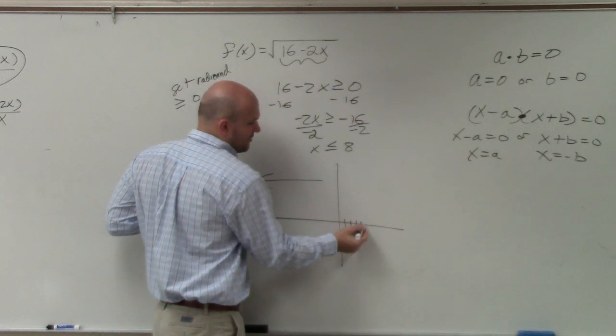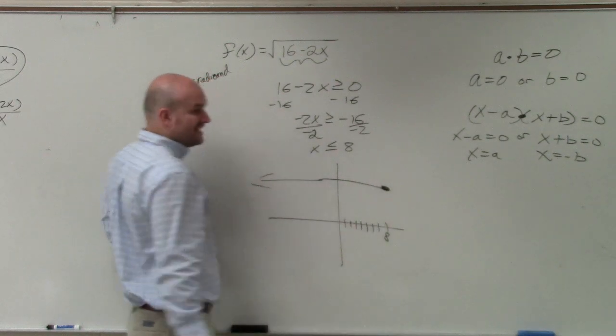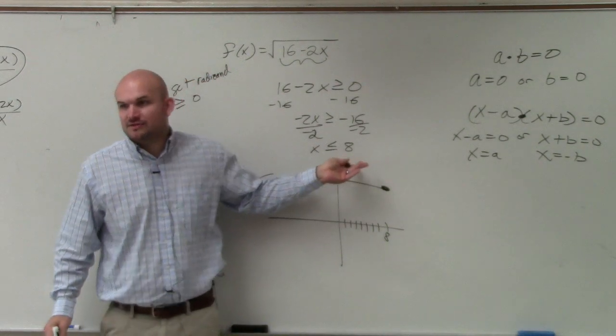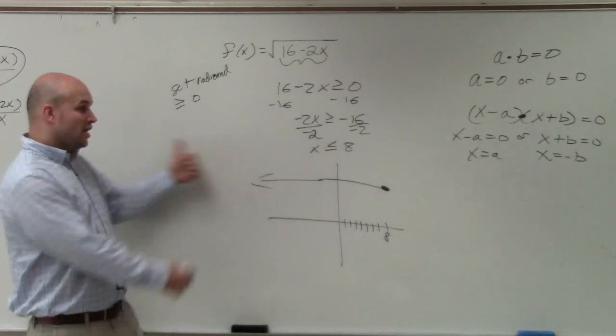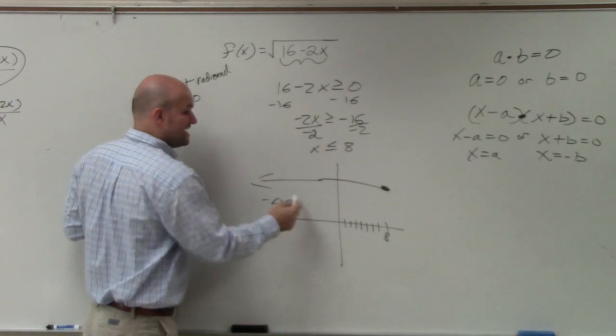But then it's going to go all the way to 8. 1, 2, 3, 4, 5, 6, 7, 8. But it's going to stop. It can't go past 8. It can't be greater than 8. So the domain is really from negative infinity to how far to the right? To 8.